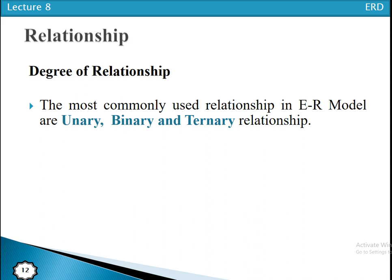The next concept is the degree of relationship. The degree of relationship is the number of entity types that participate in a relationship. The most commonly used degrees in the ER model are unary, binary, and ternary relationships.